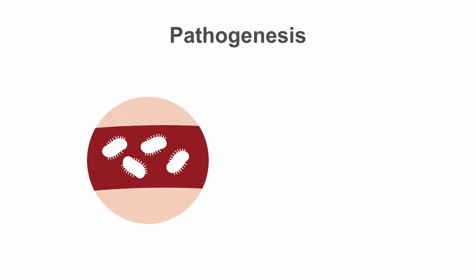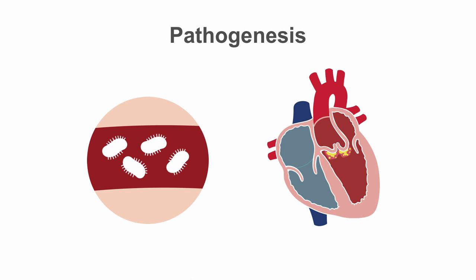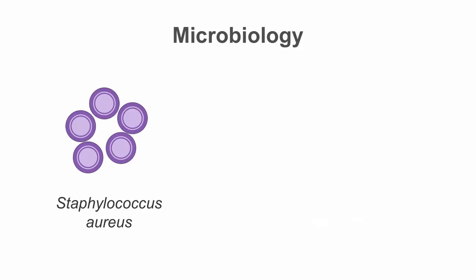If a sufficiently virulent organism is present in the bloodstream in sufficient amounts, it may colonize the damaged valve and its associated NBTE, and now the mass of bacteria and the NBTE becomes infective endocarditis.